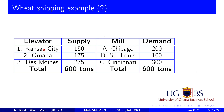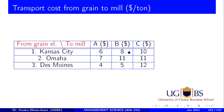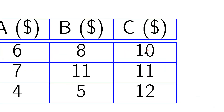Kansas City is supplying 150 tons of wheat to all three mills. Omaha is supplying 175 tons, and Des Moines is supplying 275 tons. The mills have specific demand: Chicago expects 200 tons, St. Louis expects 100 tons, and Cincinnati expects 300 tons. The cost for Kansas City sending to Chicago, St. Louis, and Cincinnati is $6, $8, and $10 respectively.